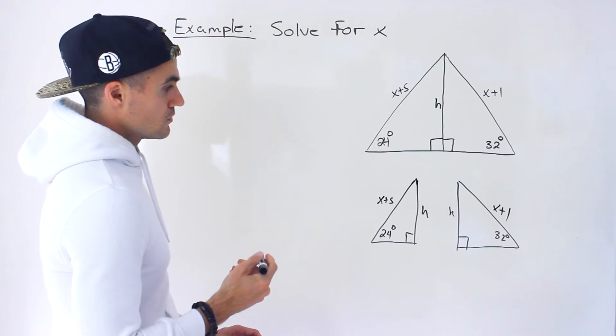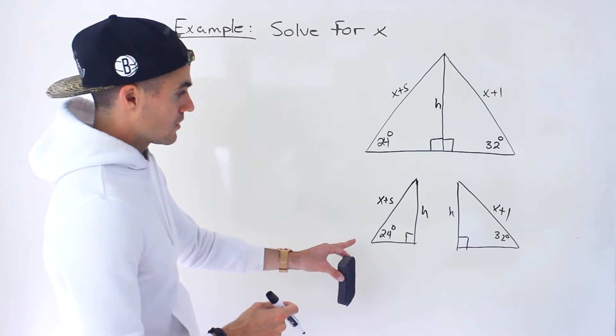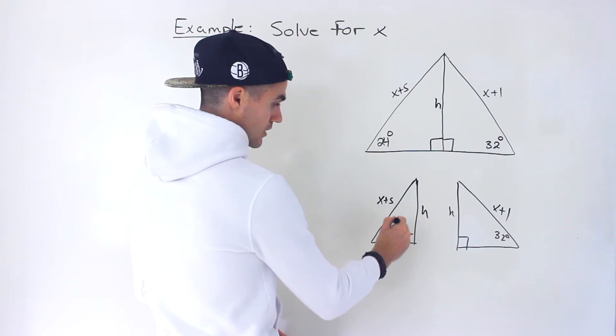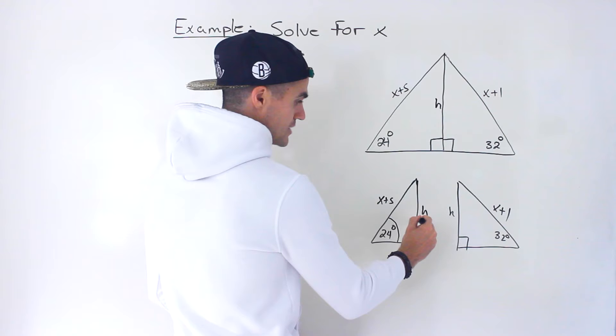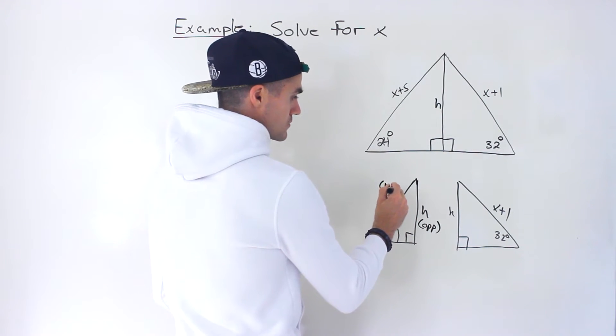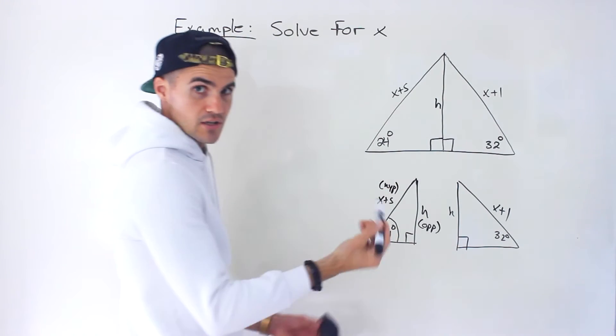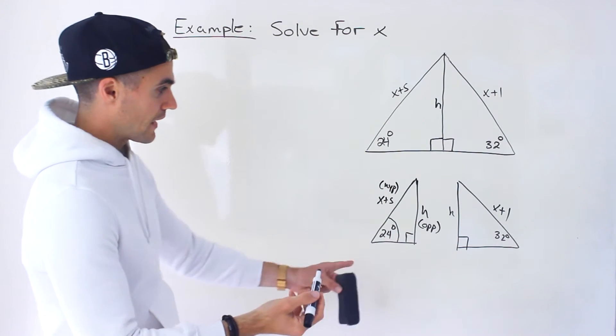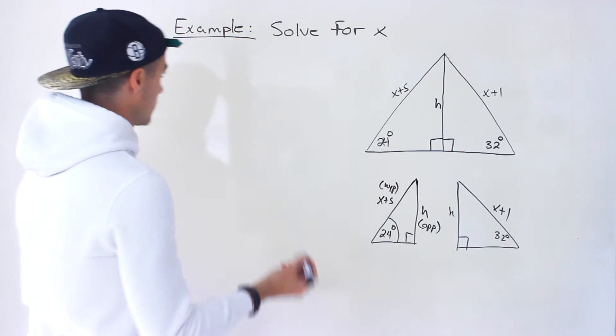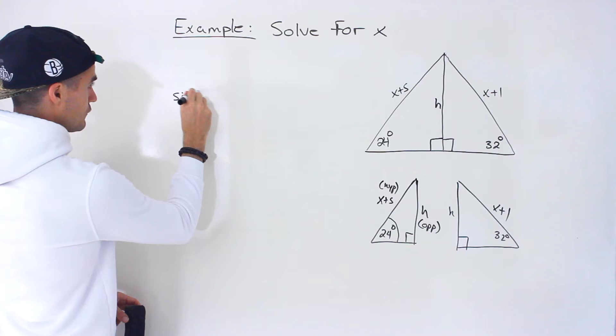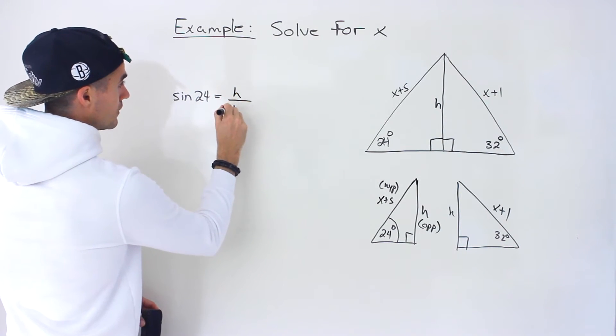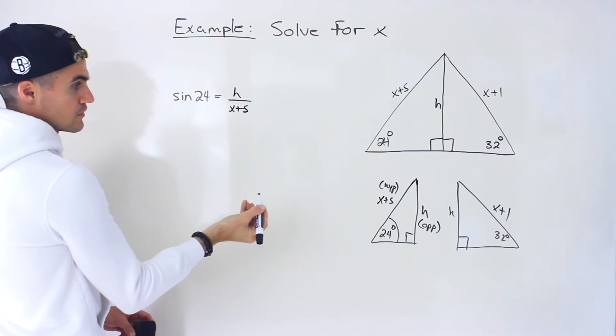Now notice that we can set up ratios here. If we look at this triangle and this angle, well this h here is the opposite side and then the x plus 5 is the hypotenuse because it's opposite to the 90 degree angle. Which ratio deals with opposite and hypotenuse? The sine ratio. So we can say sine of 24 equals h over x plus 5.